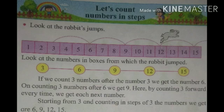So here, starting from 3 and counting in steps of 3, the numbers we get are 6, 9, 12, and 15. Understand children?